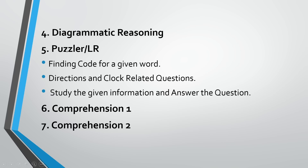Diagrammatic Reasoning is somewhat difficult, but I have provided resources in the linked video — watch that. For the Puzzles section (Logical Reasoning), questions involved finding a code for a given word (a coding-decoding type), and direction and clock-related questions — north, east, west, south direction problems and clock-based problems. This section is mainly dependent on logical reasoning and applying prior knowledge. Some questions involve studying given information — like a pie chart or bar graph — and answering the question based on that data.